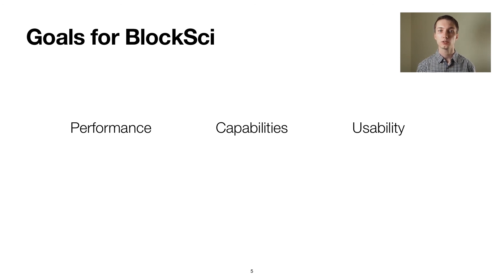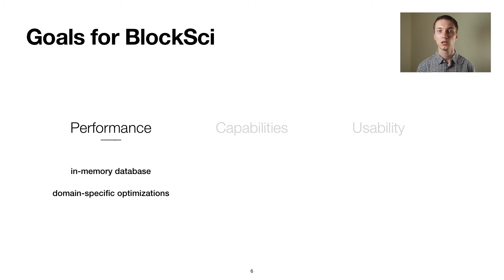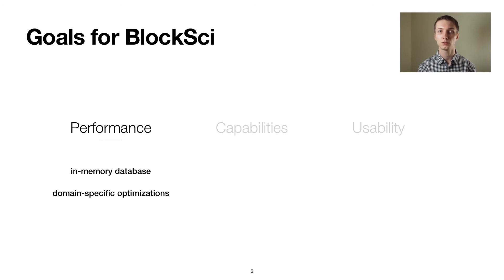In building BlockSci, we emphasize three main goals: high performance, useful capabilities for the analyst, and a user-friendly interface. To achieve high performance, we build BlockSci as an in-memory database. By exploiting many domain-specific characteristics of blockchains, such as their append-only nature, we built a system that can analyze the full Bitcoin blockchain in a matter of seconds for typical longitudinal analyses.